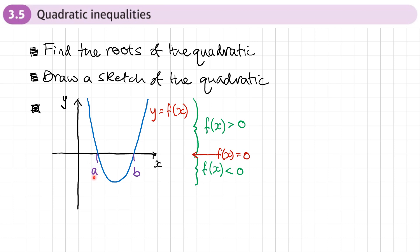I've drawn a sketch down here, and these roots — for this example A and B — are found first. Then we need to draw a sketch of the quadratic. The reason we use a sketch is because the different parts of the graph are going to help us solve different inequalities. The part of the graph which is above the x-axis will tell us which values give the quadratic greater than zero.